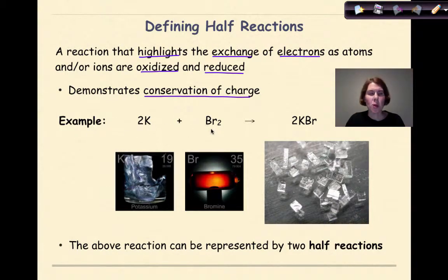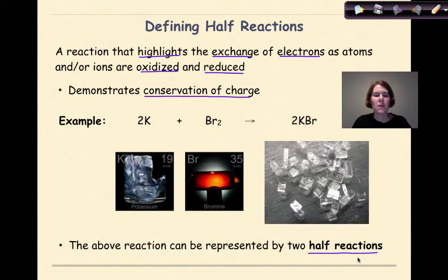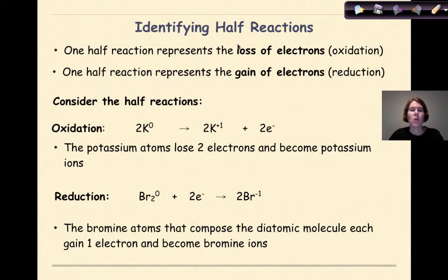We have potassium plus bromide gives us potassium bromide. We're going to take this chemical reaction and break it down into two half reactions — one representing oxidation and one representing reduction. When we identify half reactions, one half reaction is going to represent the loss of electrons, otherwise known as oxidation.